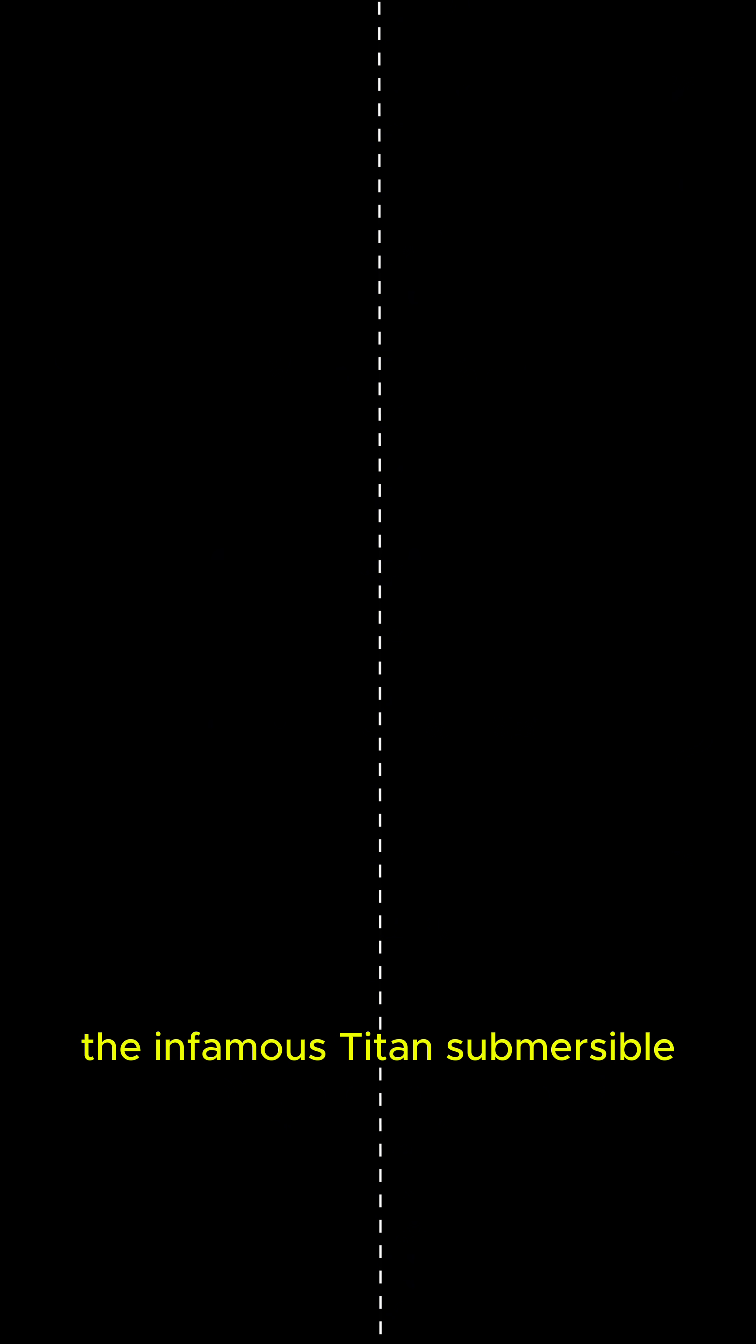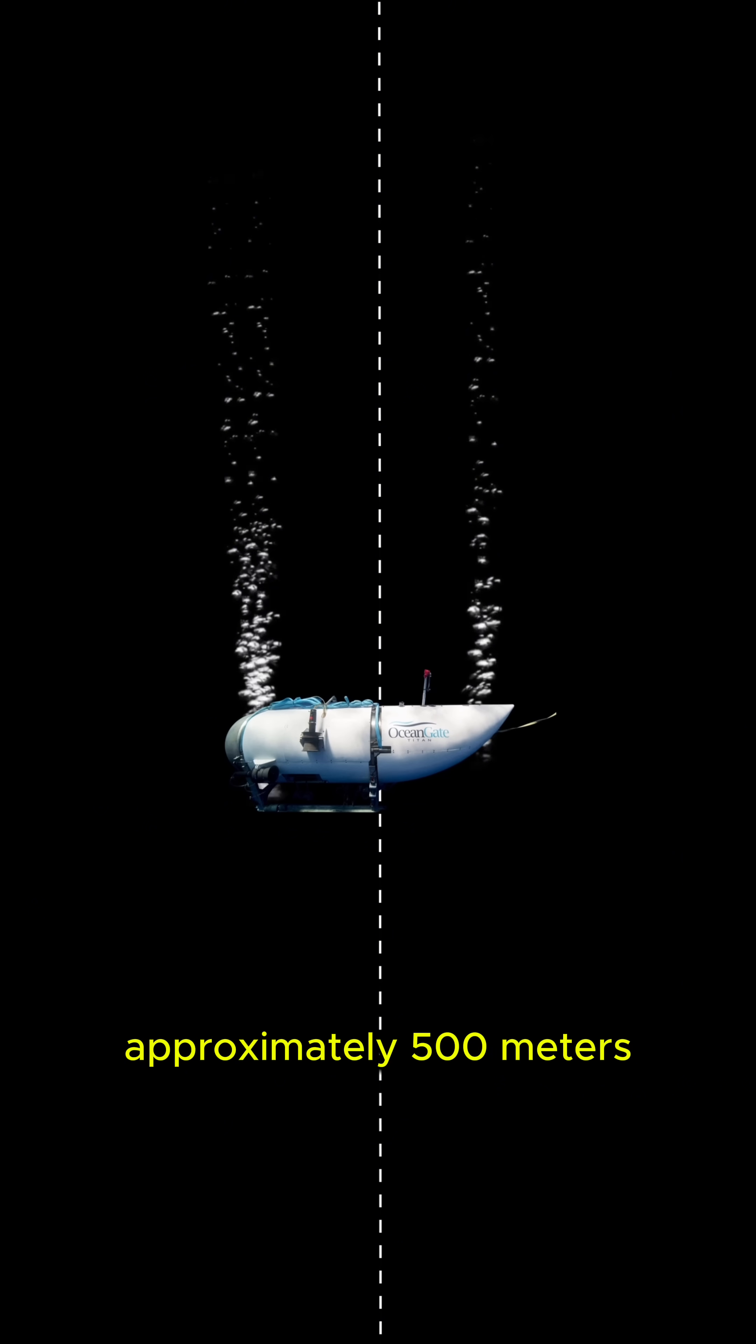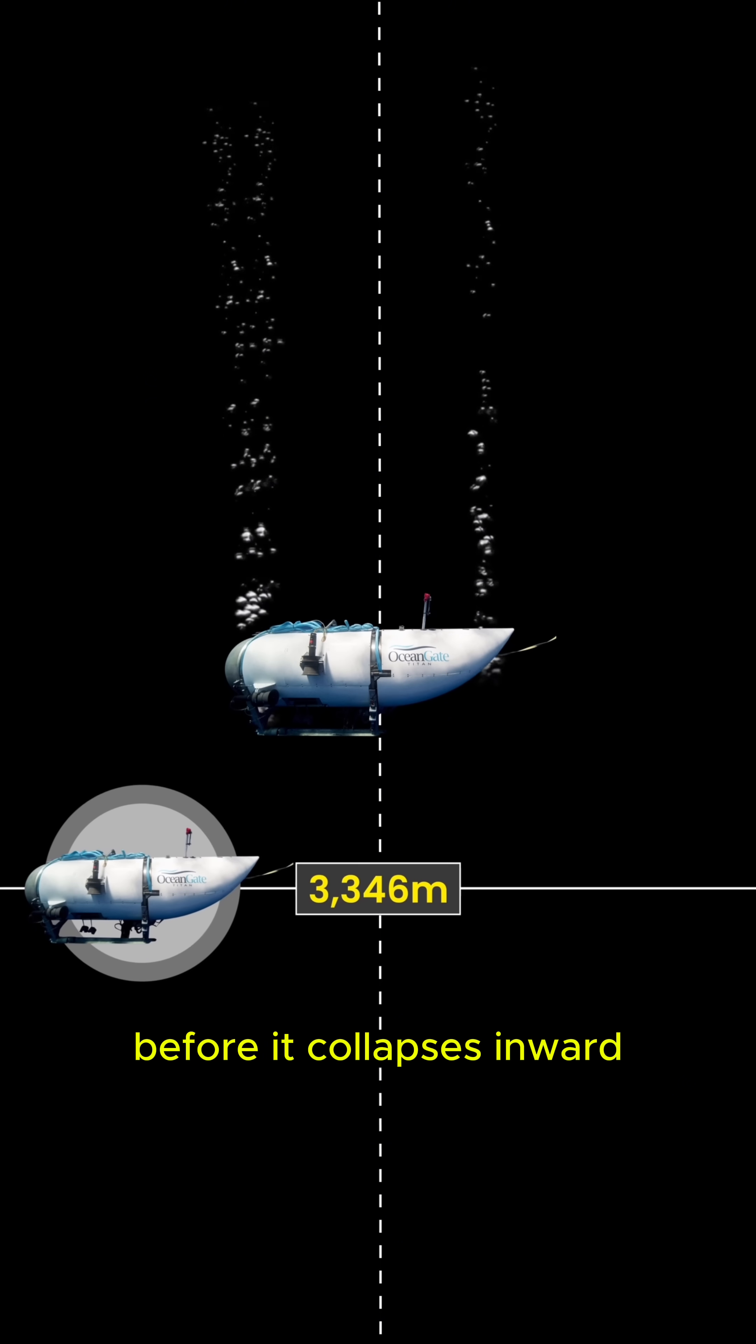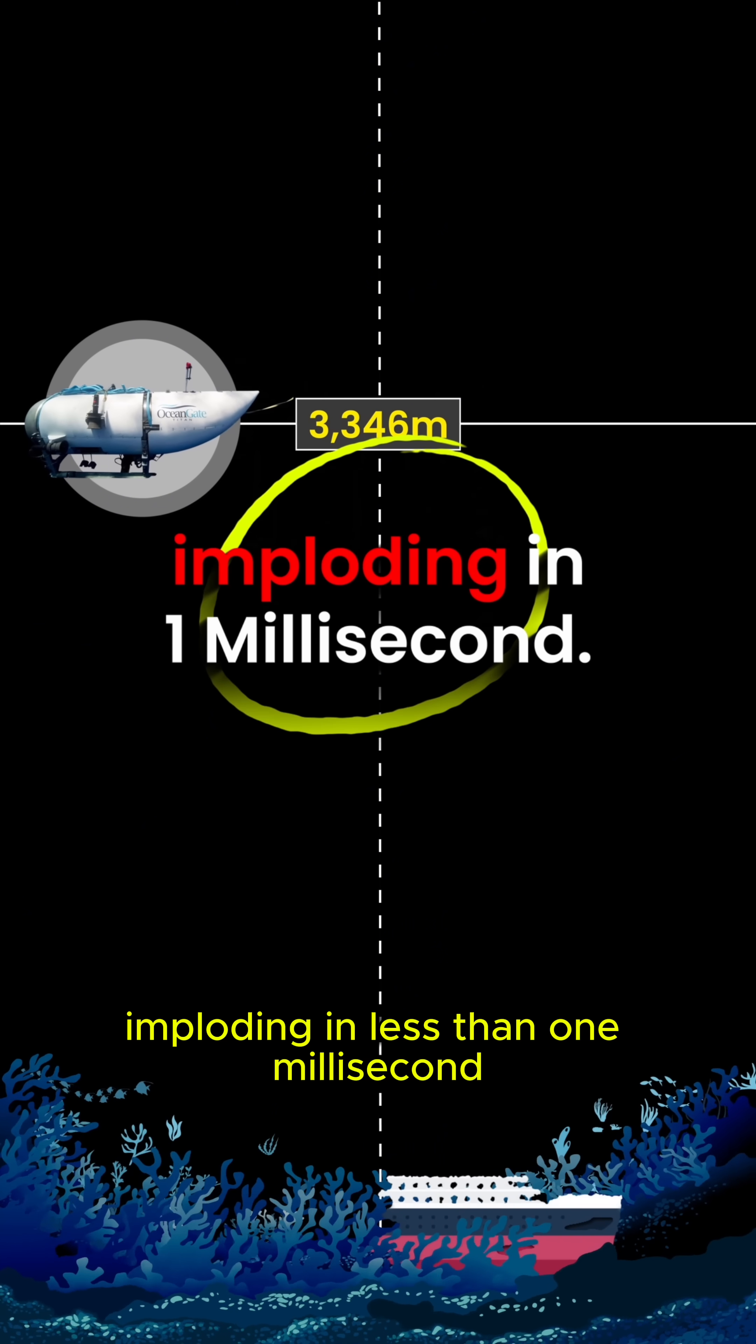The infamous Titan submersible would get to a depth of 3346 meters, approximately 500 meters from the bow of the Titanic, before it collapses inward at a speed of roughly 1500 miles per hour, imploding in less than one millisecond.